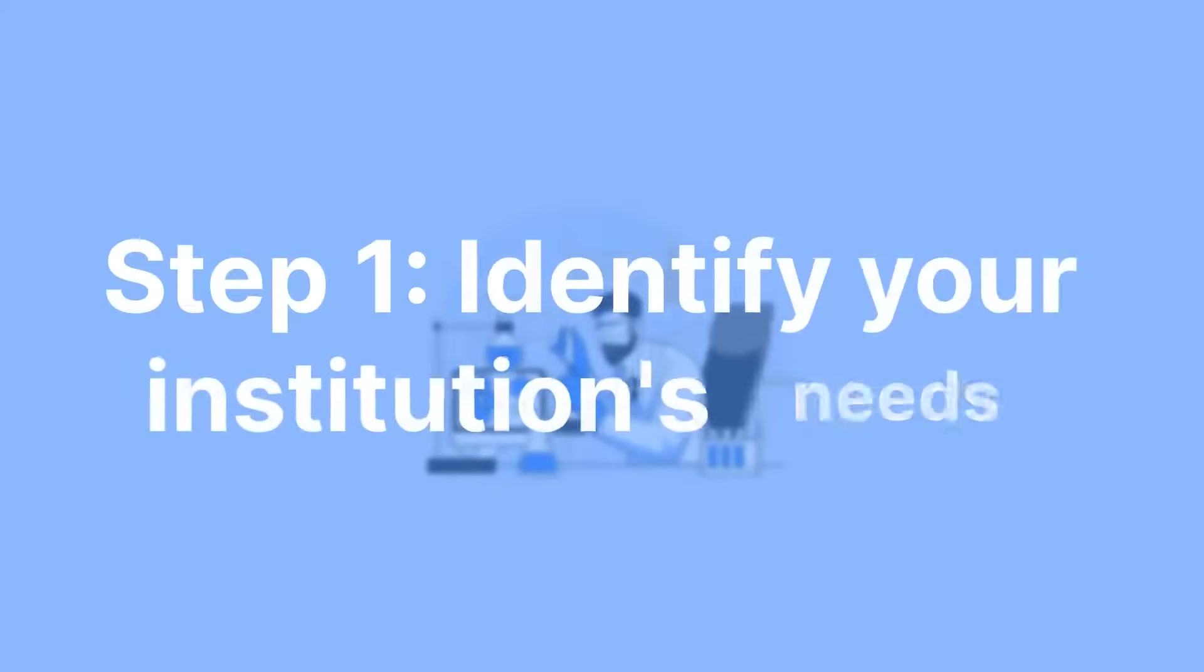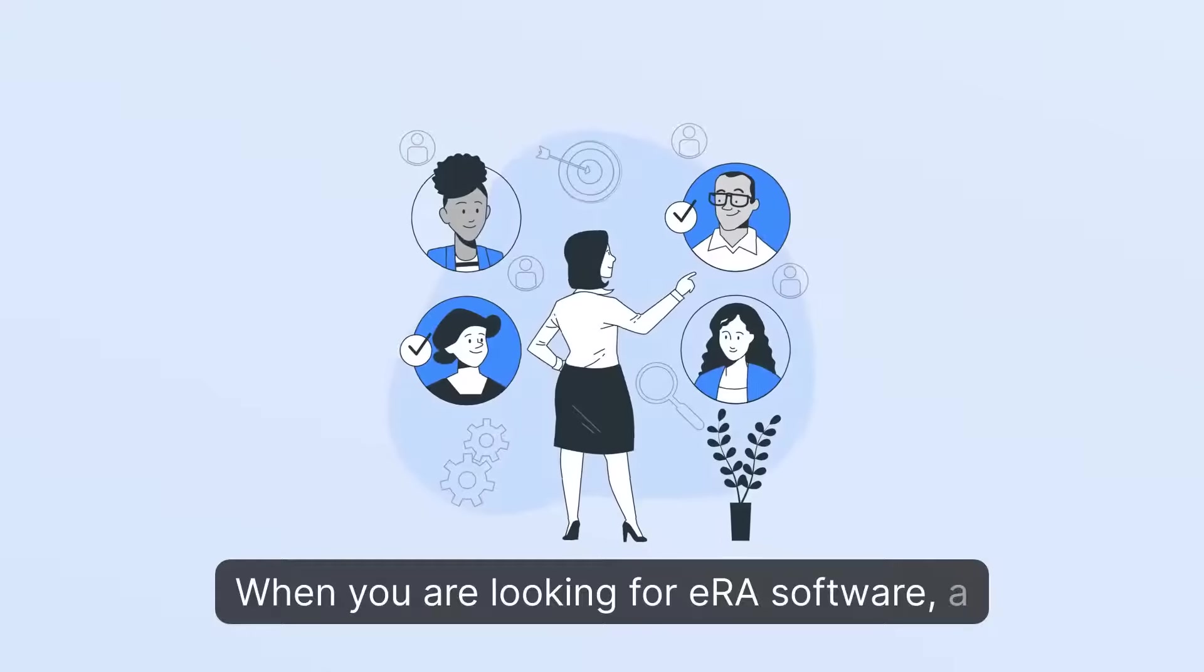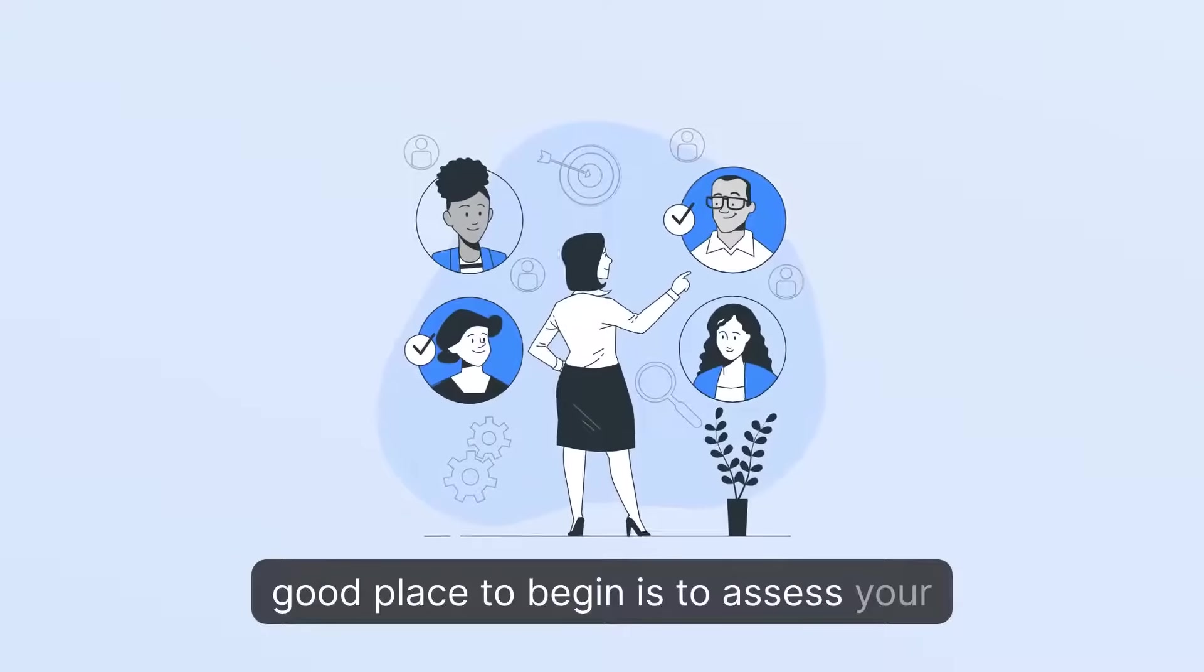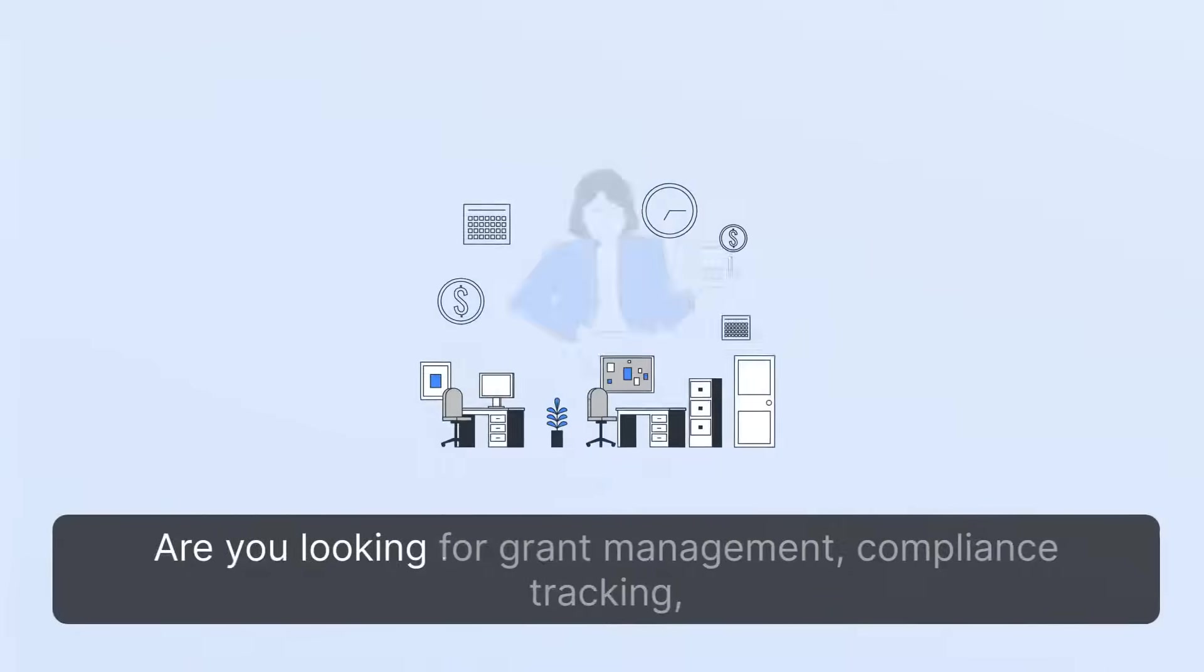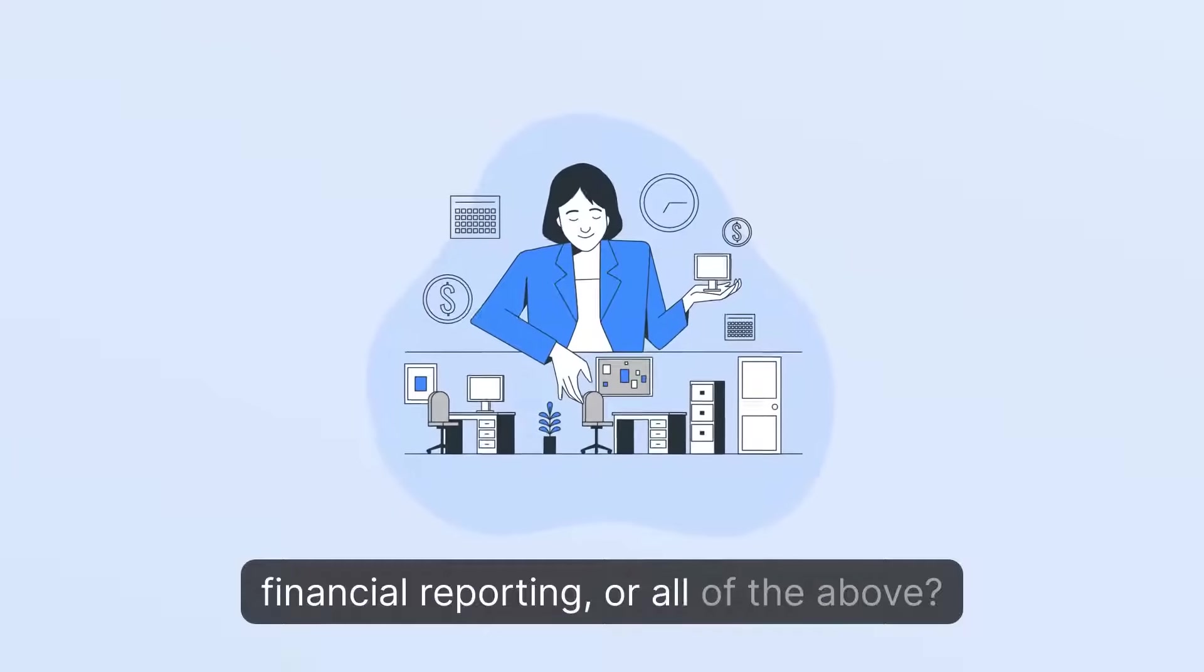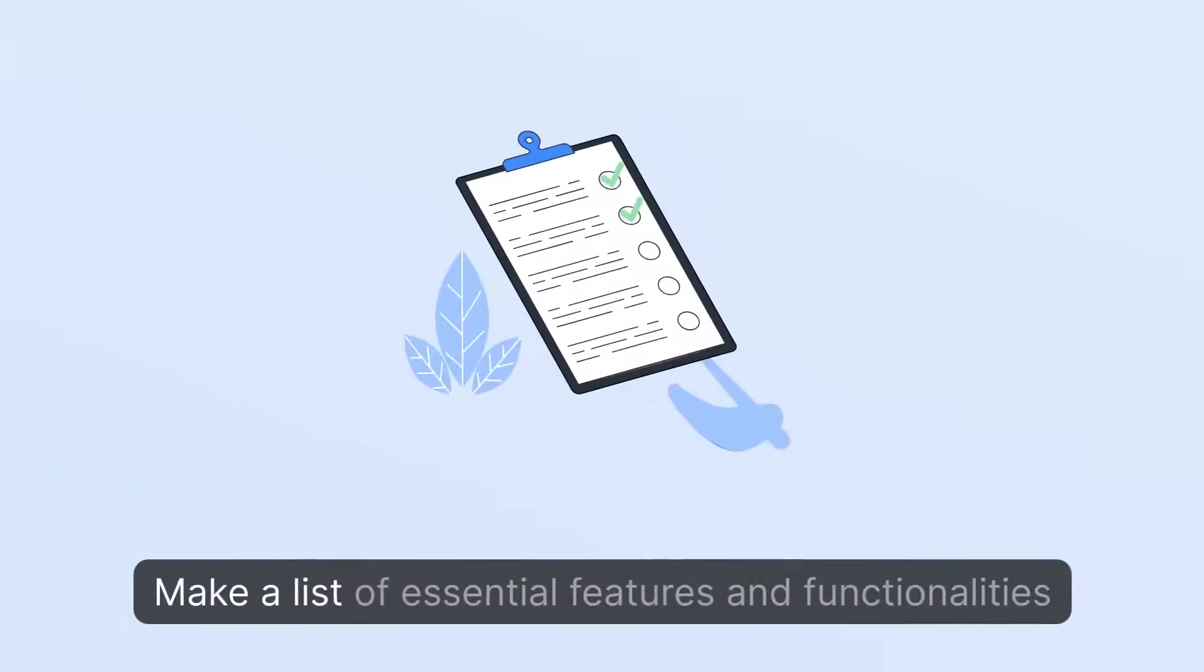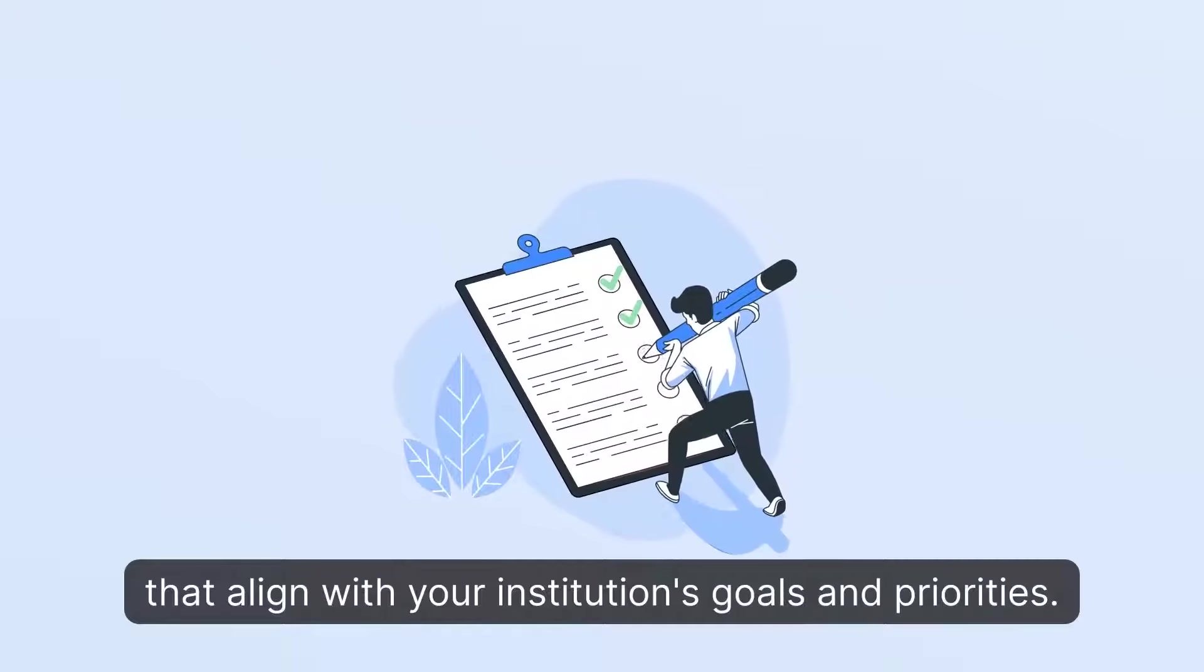Step 1. Identify Your Institution's Needs. When you are looking for ERA software, a good place to begin is to assess your institution's specific needs and requirements. Are you looking for grant management, compliance tracking, financial reporting, or all of the above? Make a list of essential features and functionalities that align with your institution's goals and priorities.